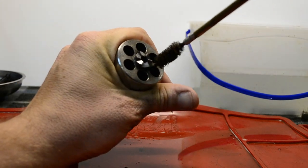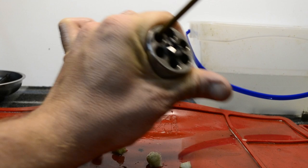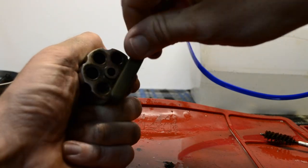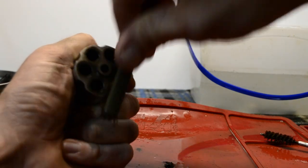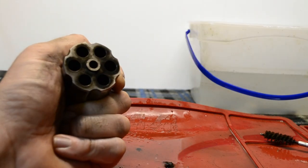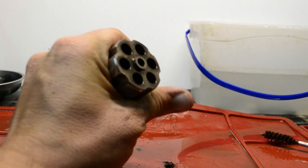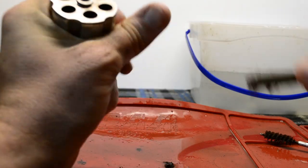Take your bore brush and run it through each of the chambers in the cylinder several times. Take your wire brush and scrub the front of the cylinder with it while periodically wiping it down with a gun rag or paper towel, applying Simple Green as necessary. Repeat this process until most of the powder residue is removed.